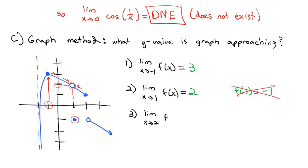Let's take the limit as x approaches 2 of f(x). At x = 2, from the left side the graph is getting close to 1, but when we come in from the right side it's getting closer and closer to -1. Since those are not the same value — it's not approaching the same value from both sides — we have to say this limit does not exist.